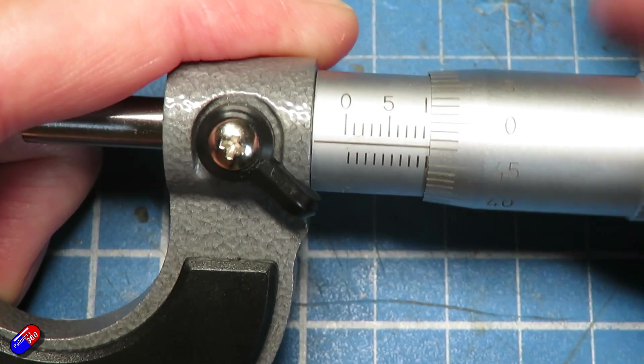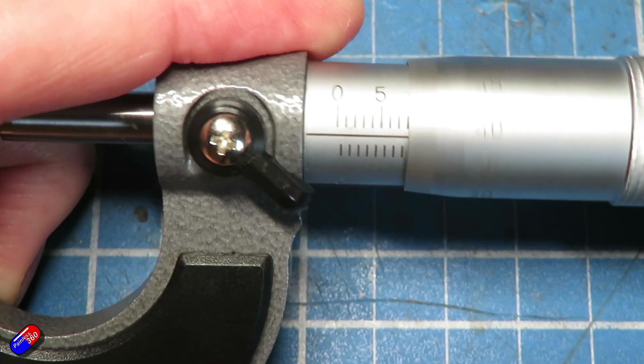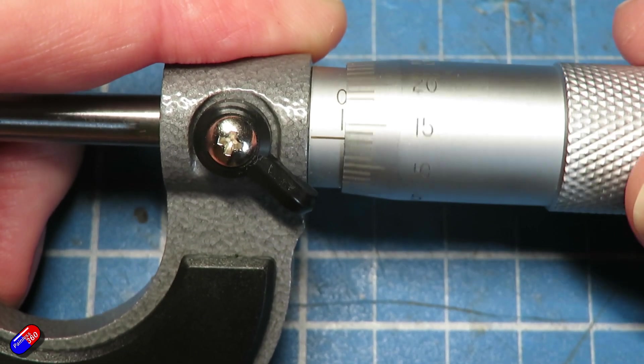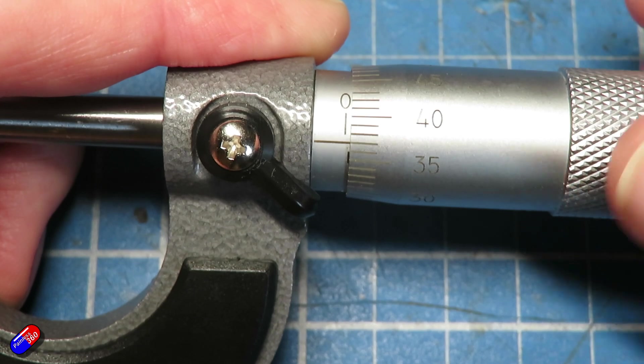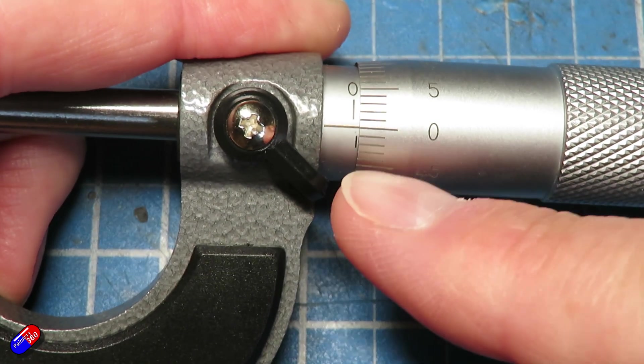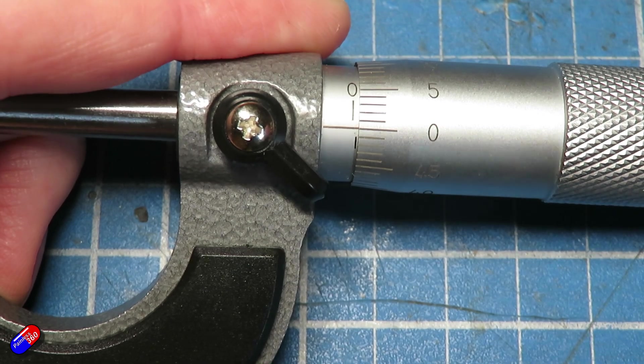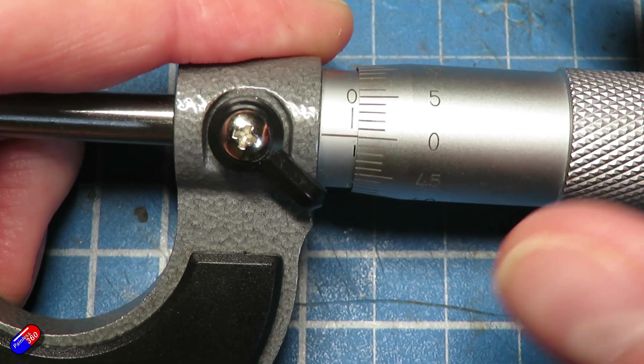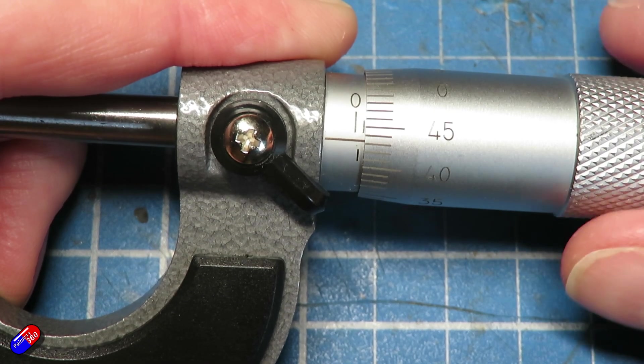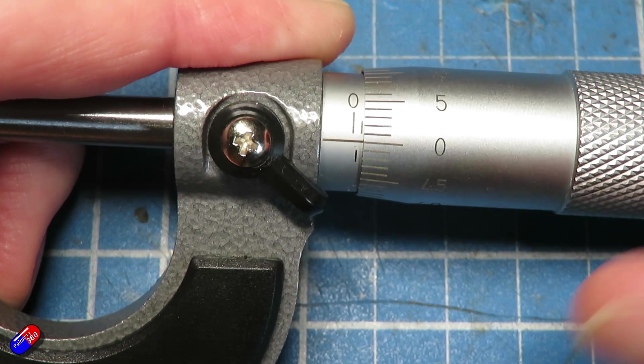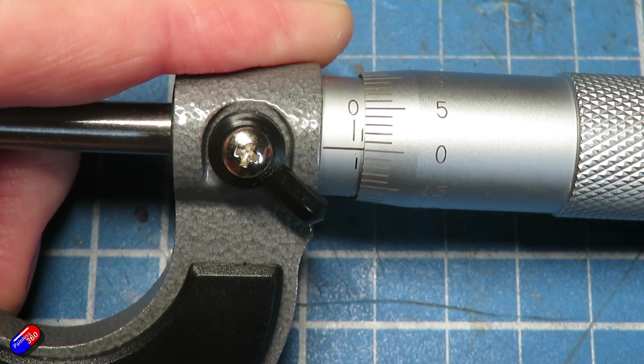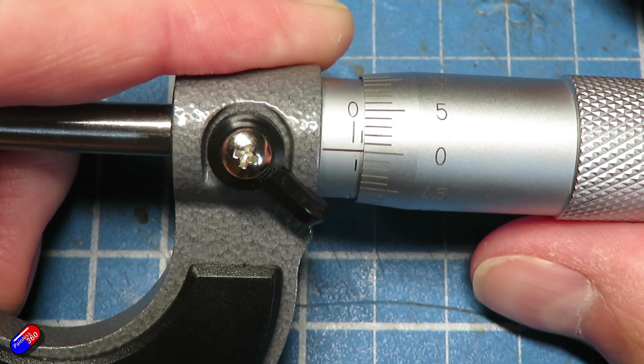If I close this up all the way to the end, as I unwind it - one full revolution gives me half a millimeter - you can just about see that half millimeter mark. If I roll it out another half millimeter so the zero comes back on that datum line, you can see the one millimeter mark is shown.